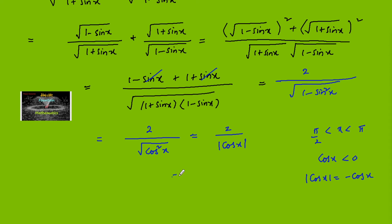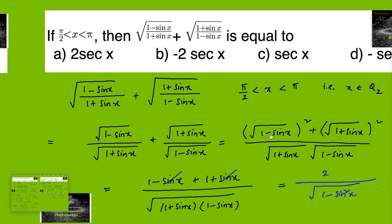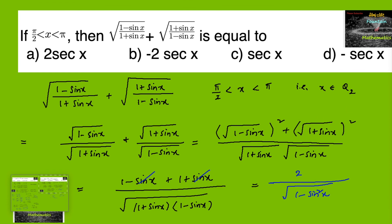Since cos x is negative, |cos x| = -cos x. So we can write 2 / (-cos x) = -2 · (1/cos x) = -2 sec x. Therefore the answer is -2 sec x, which is the correct option.